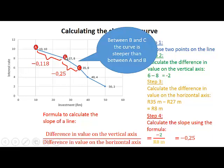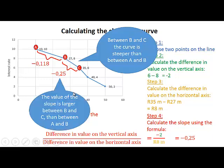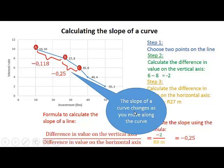Between points B and C, the curve is steeper than between points A and point B. Therefore, the value of the slope between points B and C is larger than the value of the slope between points A and B. As you can see, the slope of a curve changes as you move along the curve.